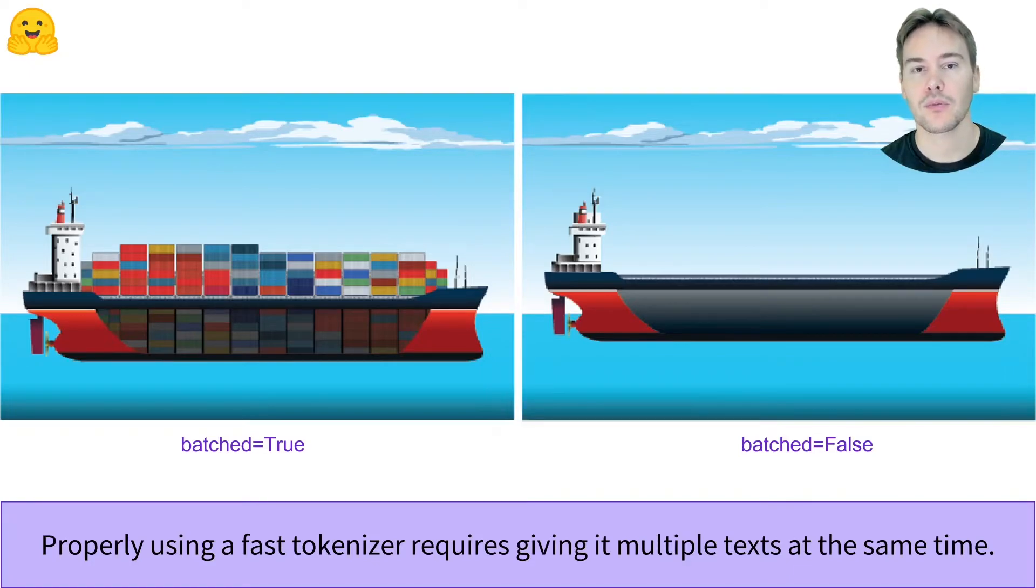To unleash the full speed of our fast tokenizers, we need to send them batches of texts, which we can do with the batch=true argument of the map method.